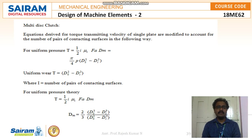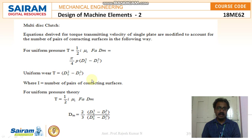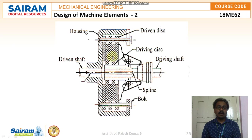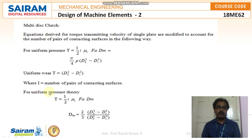For the multi-disc clutch, the equations derived for single plate clutch are modified to account for the number of pairs of contacting surfaces. For uniform pressure theory: T = (1/2) * i * mu * Fa * dm, which equals (pi/4) * p * (do² - di²). For uniform wear theory: T = (1/2) * i * mu * Fa * dm, where i is the number of contacting surfaces. Note: if three clutch plates are there, it is not necessary that both sides of all three plates have effective contact surfaces — typically three or four contacting surfaces are sufficient.